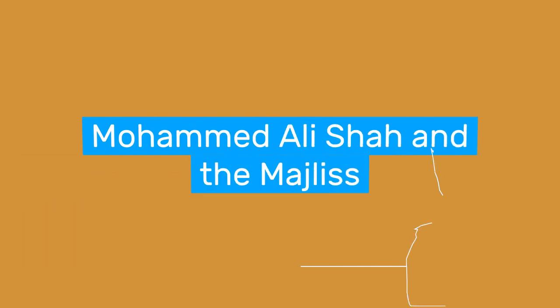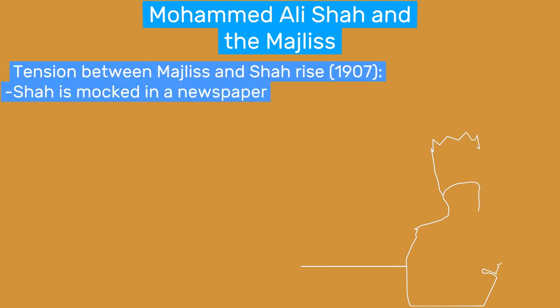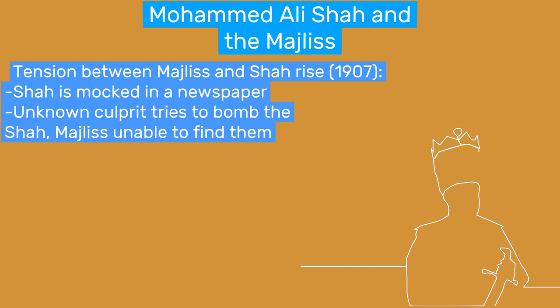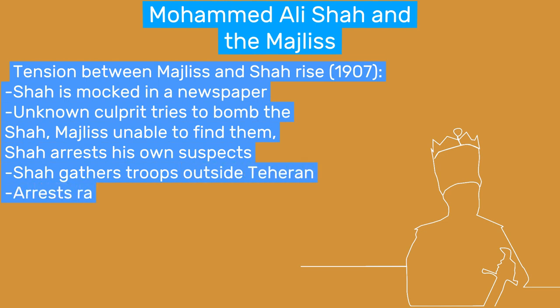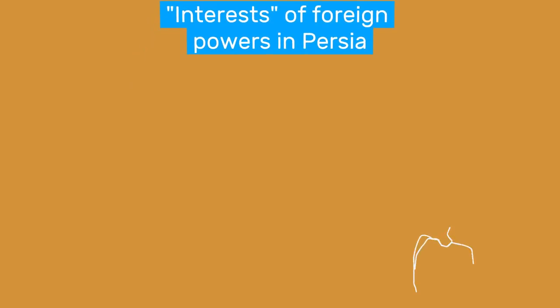In 1907 and 1908, tension increased between the Majlis and the Shah. One contributing event was when a newspaper criticized and mocked the Shah — he demanded it be closed, but the Majlis saw this as a breach of constitutional rights and blocked the trial. On another occasion, an attempt was made on Muhammad Ali Shah's life. The assassin was never found, and the Shah arrested some suspected culprits, which was a breach of the constitution. By the end of 1907, the Shah had gathered his Cossack Brigade outside Tehran and arrested some radical members of the Majlis. The Persian Cossacks were an elite brigade composed of Circassians and Persians with Russian officers, established by Nasser ad-Din Shah. It was generally loyal to the Shah but also represented Russian interests to some extent.